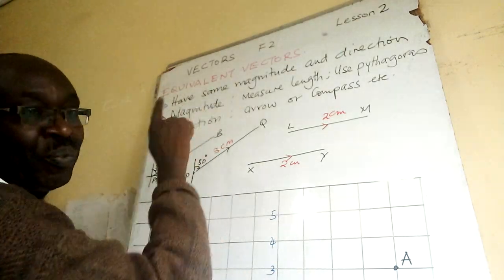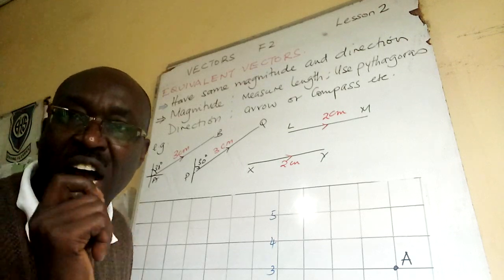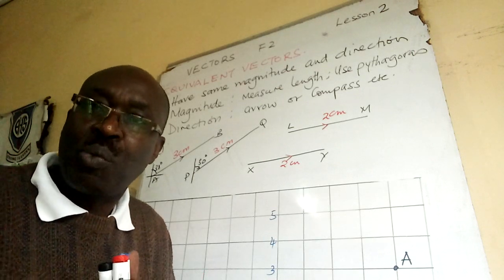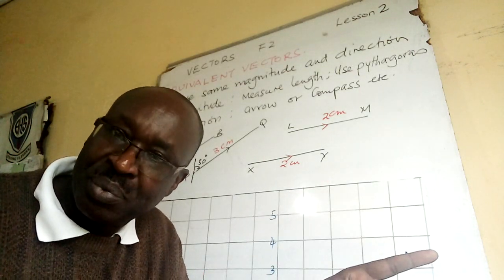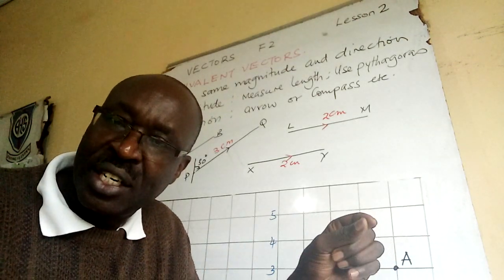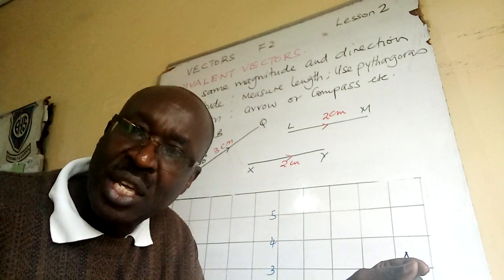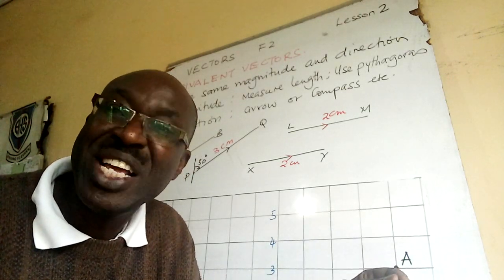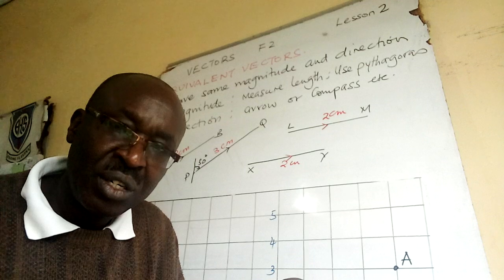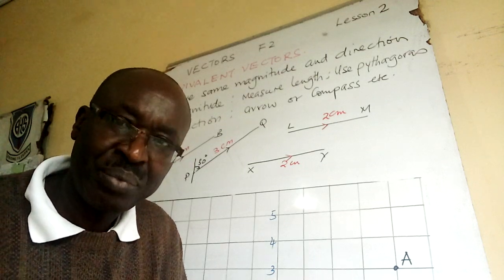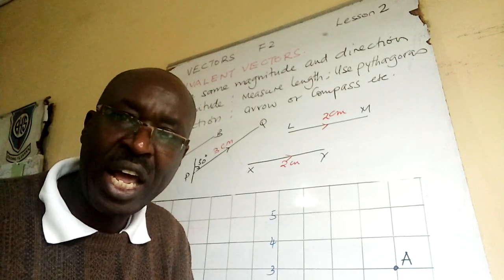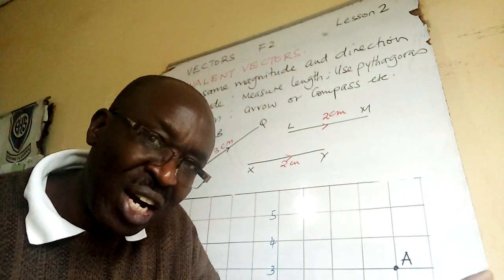Equivalent vectors have the same magnitude and direction. If you move from one point to another and measure the length from A to B and you got it is 10 meters, and the direction is towards east, that's your vector from A to B.